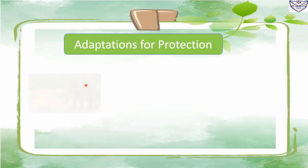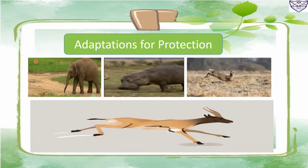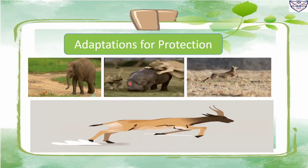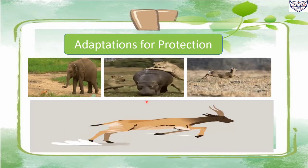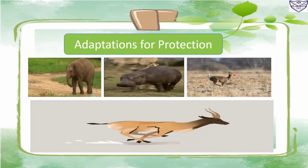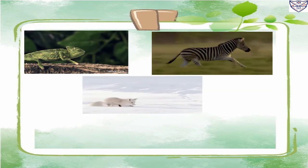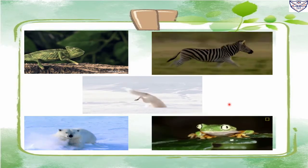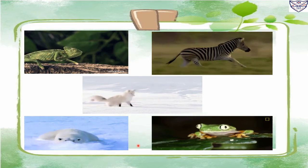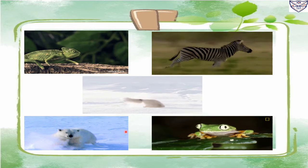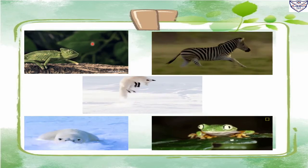Adaptation for protection: many animals have adapted well to their environment to protect themselves from enemies. Animals like elephant and hippopotamus have thick skin to protect themselves. Some animals have very strong legs which help them to run very fast in danger — for example, deer. Some animals like chameleon, zebra, arctic fox, polar bear, and frog can trick their enemies because their body color blends with their surroundings, confusing their enemies. This is known as camouflaging. Chameleons can also change their body color according to the surroundings. Grasshopper and stick insect are other examples of animals that show perfect camouflaging.